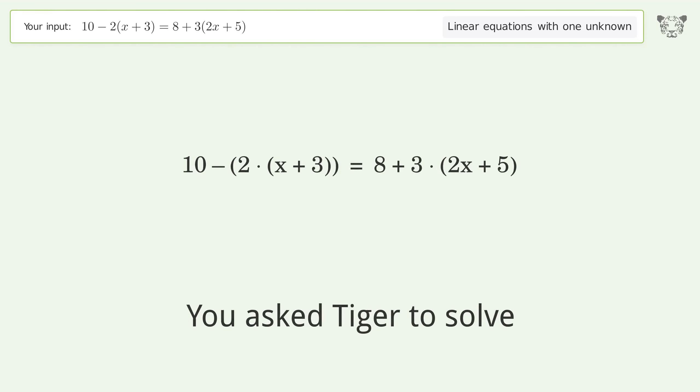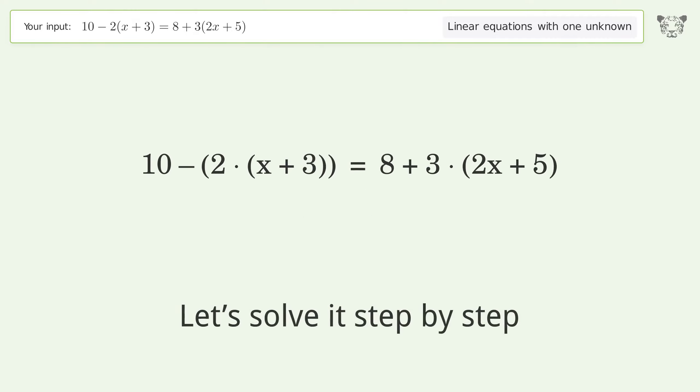You asked Tiger to solve this. It deals with linear equations with one unknown. The final result is x equals negative 19 over 8. Let's solve it step by step.